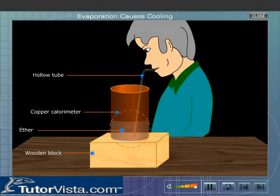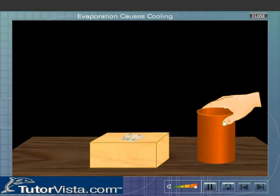Blow air through the tube so that the ether gets converted into its vapors. Remove the calorimeter.